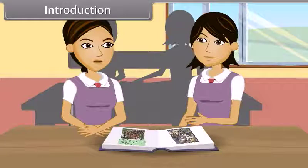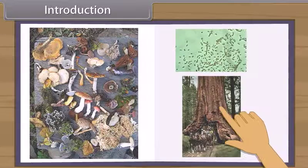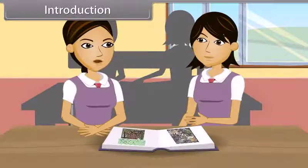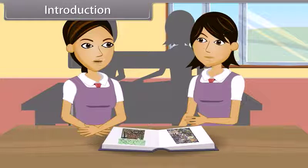On one hand we have bacteria which are microscopic and on the other hand we have the blue whale, about 30 meters, or redwood trees, sequoia of California, of about 100 meters in height. Likewise, insects have a lifespan of few days while trees, especially pine trees, live for 1,000 years.